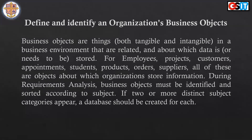Business objects are things — both tangible and intangible — that can be touched or cannot be touched. In a business environment, they must be related and must provide information that we can collect. Examples include employees, projects, customers, appointments, students, products, orders, suppliers — all of these could be objects within an organization.